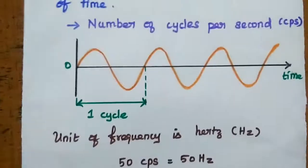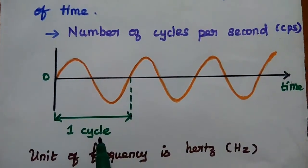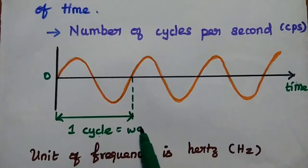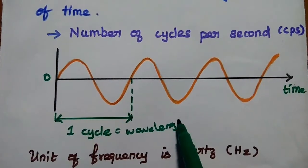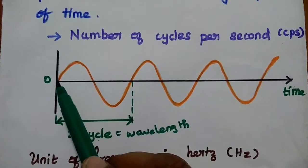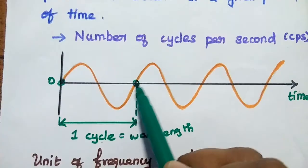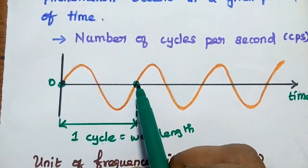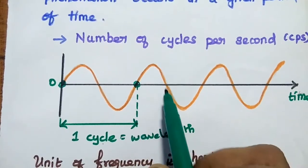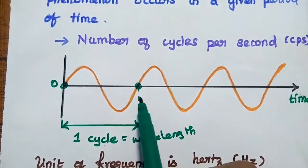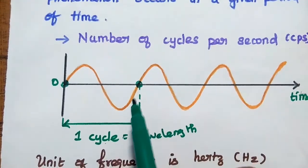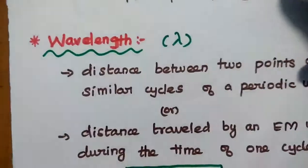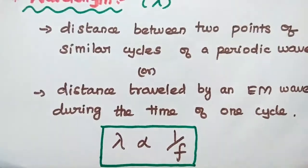Wavelength represents one complete cycle as a distance — from zero, through positive and negative, back to the same point before the cycle repeats. That distance is one wavelength. Wavelength is always inversely proportional to frequency.